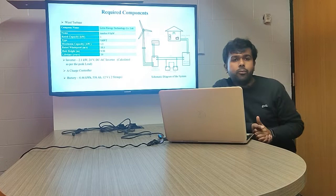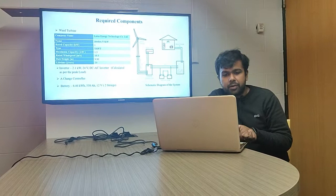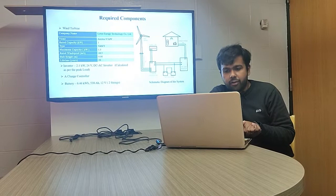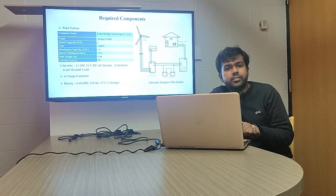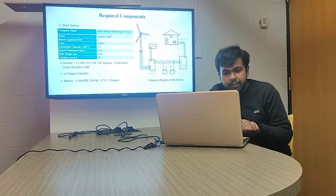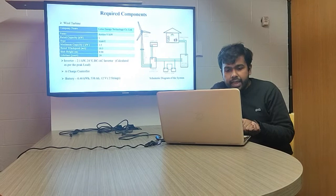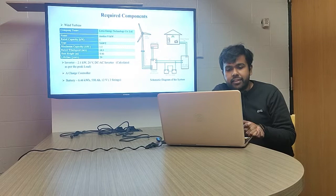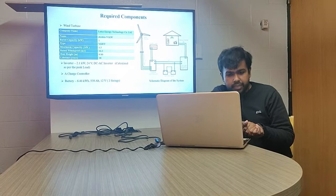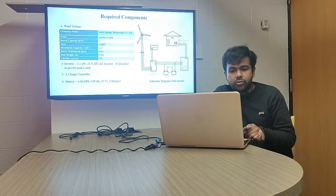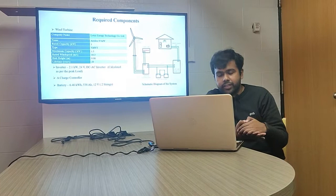Now we need to select the components required to generate power. The wind turbine is the main part of our project. We selected the ELOS virtual axis wind turbine, which is 1 kilowatt with a maximum capacity of 1.5 kilowatt. We considered a hub height of 9.9 meters and a lifetime of 20 years. We also selected a 24-volt DC to AC inverter with a capacity of 2.1 kilowatt, along with a charge controller.